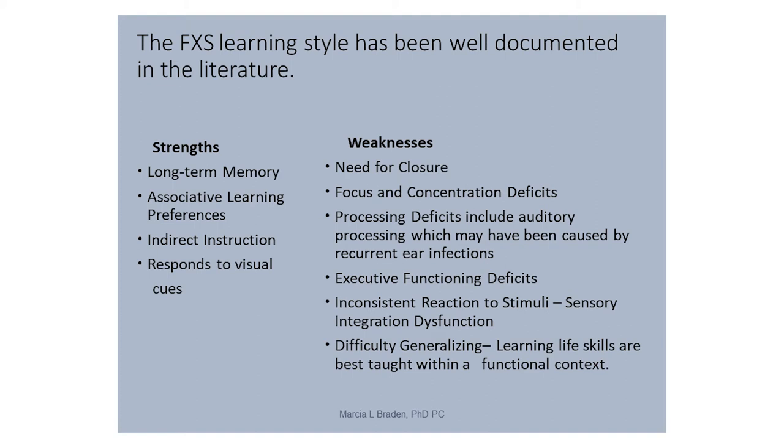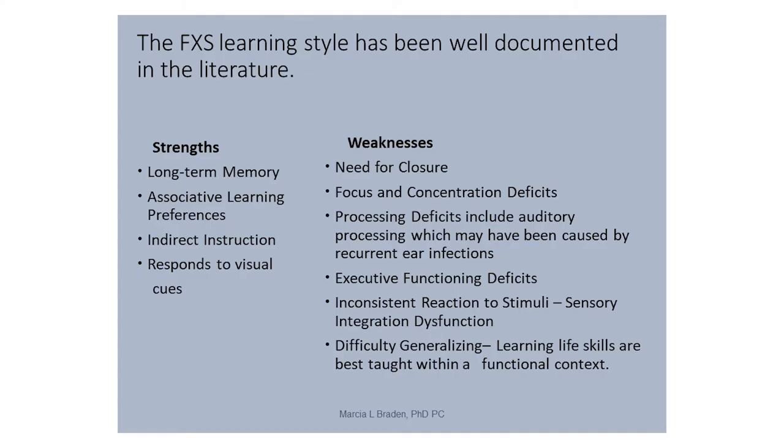Their learning style — gestalt learners, meaning the whole first. They are simultaneous learners. Backward chaining helps because they see the whole thing and you pull out the last step. Indirect instruction and side-dialoguing are useful. Strengths include long-term memory — they remember things from a long time ago in vivid detail. Associative learning means you need to put things in context with a storyline. Deficits include slow processing, executive functioning weakness, and sensory dysregulation.